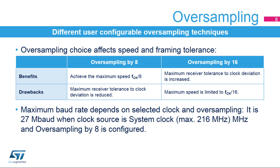This allows a trade-off between the maximum communication speed and noise clock inaccuracy immunity. Select oversampling by 8 to achieve higher speed, up to FCK/8, where FCK is the USART clock source frequency; in this case the maximum receiver tolerance to clock deviation is reduced. Select oversampling by 16 — OVER8 equals 0 — to increase the tolerance of the receiver to clock deviations; in this case the maximum speed is limited to FCK/16. The maximum baud rate that can be reached is 27 megabaud when the clock source is at 216 MHz and oversampling by 8 is configured. With other clock sources and/or a higher oversampling ratio, the maximum speed is limited.